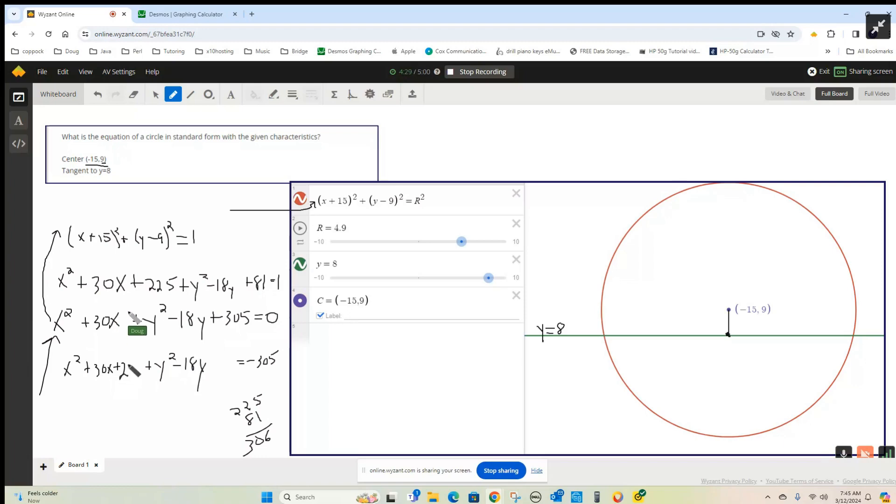15 squared is 225. So we've got to add 225 to this side. Half of negative 18 is negative 9, plus 81, plus 81.